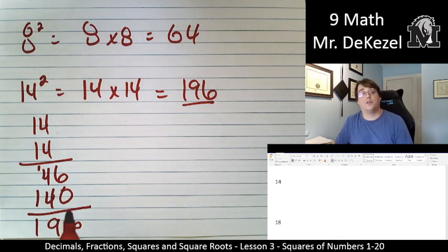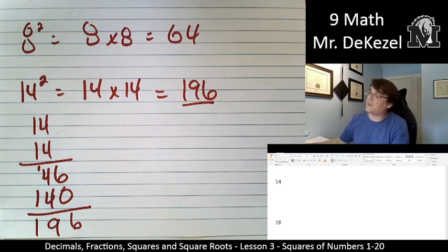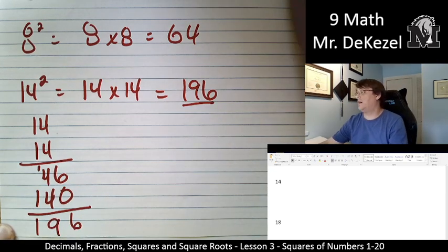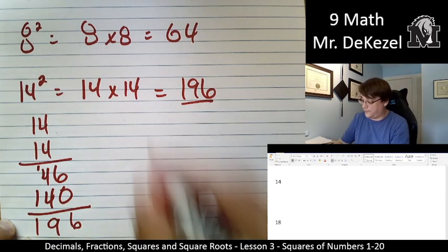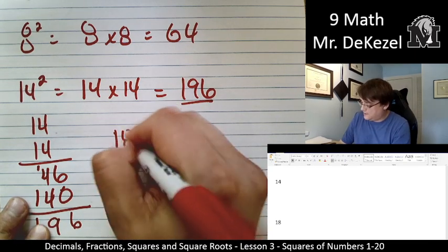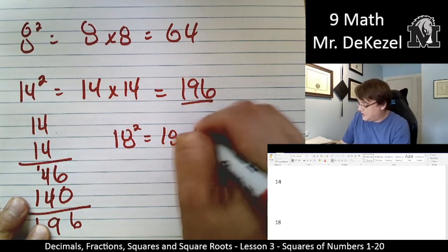As we are going to do the opposite, I think, in the next lesson. Regardless, let's do the next problem. I'm going to try to fit it right here. 18 squared is 18 times 18.